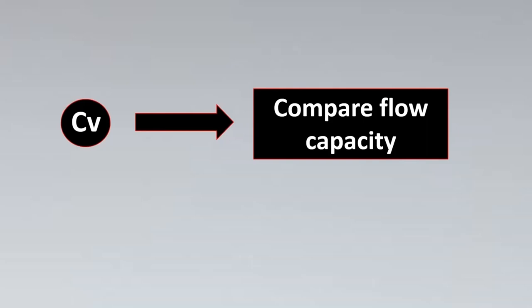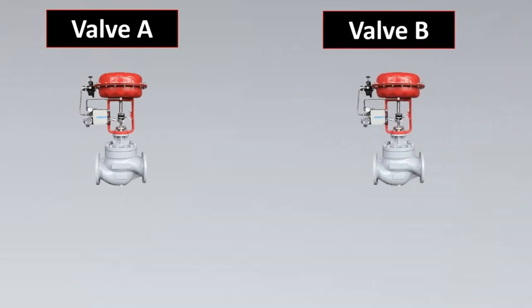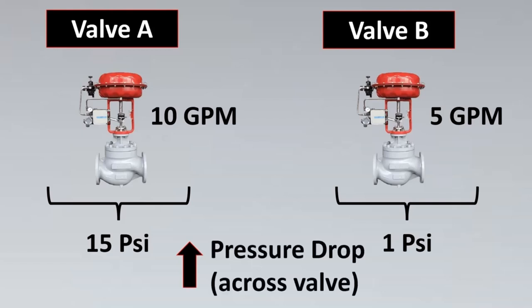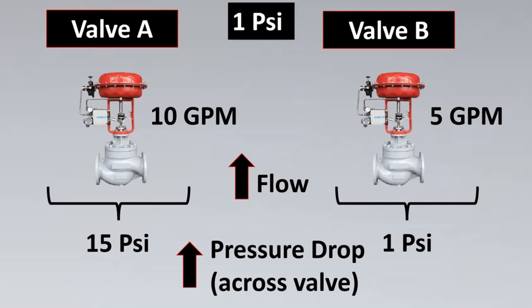Let us dig into this concept in such a way that we will remember it forever. Imagine valve A has a flow rate of 10 GPM and valve B has a flow rate of 5 GPM. Here we cannot say that valve A has the higher flow capacity. Why? Because both valves could be made of the exact same construction and same size, but the pressure drop across the first valve might be 15 PSI while the pressure drop across the second valve is just 1 PSI. As you increase the pressure drop across the valve, the flow through the valve increases.